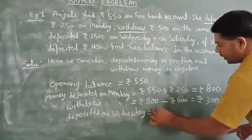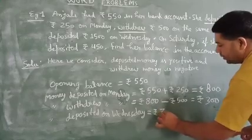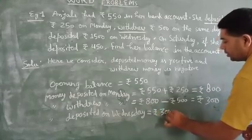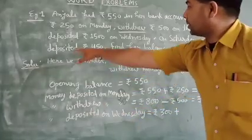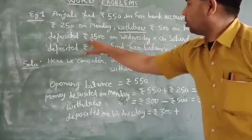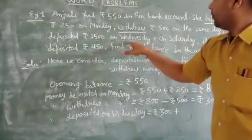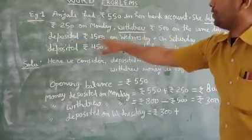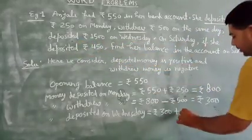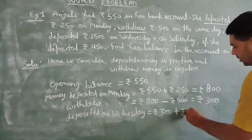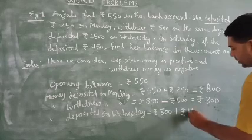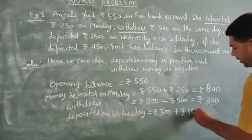The balance is Rs.300. Deposit is positive. The deposit amount is Rs.1,500. The balance — Rs.300 plus deposit Rs.500.